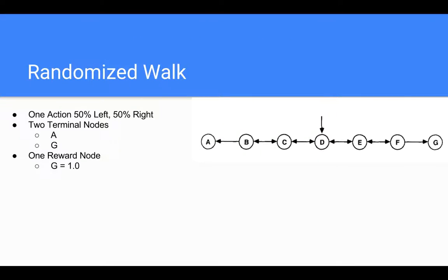The domain that this paper uses to generate these figures is the randomized walk. The randomized walk is a Markov decision process with seven nodes, as shown here in this slide. There are two terminal nodes — the very far left and the very far right — and there's only one action a user can take at any given node: it stochastically chooses whether to move left or right with equal probability in both directions.